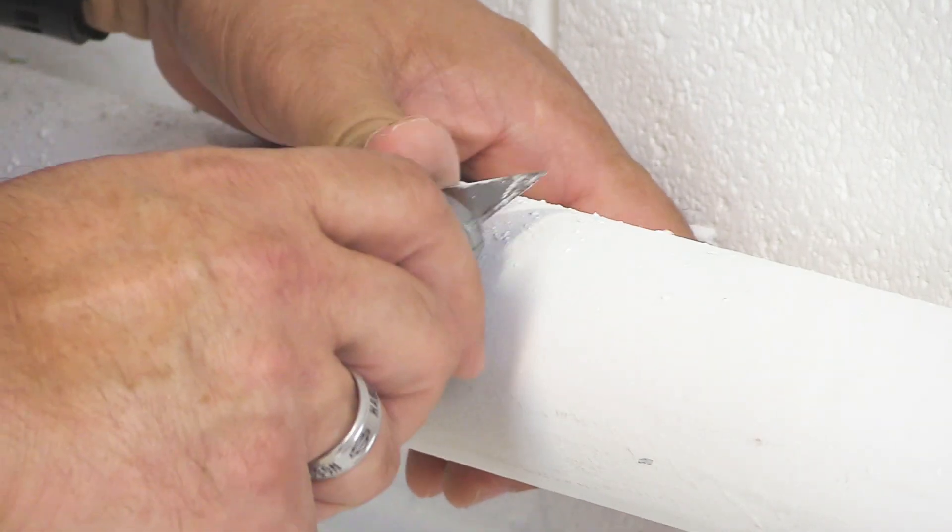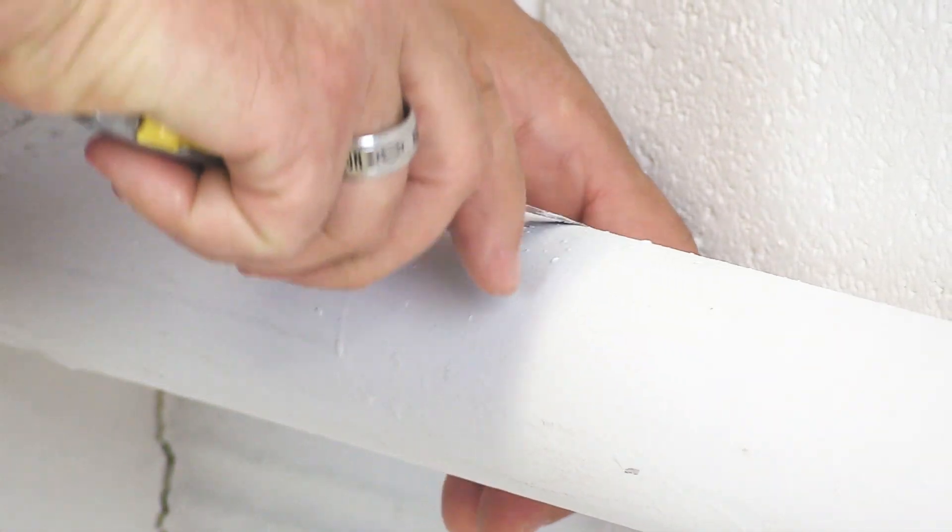Let's go ahead and show you how to install this cable to the pipe. The first thing you need to do is get the pipe nice and clean. You want to make sure the pipe is clean so the tape adheres to it very well and you also want to deburr it to make sure there's nothing sharp on the pipe.